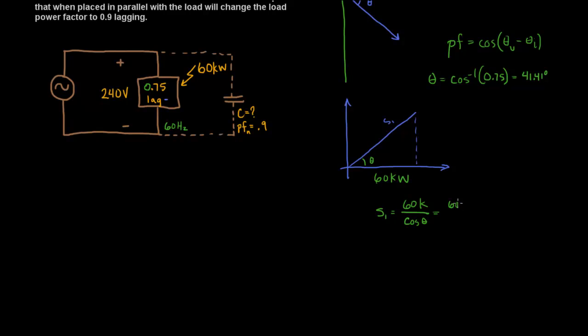So this is 60,000 over 0.75, which is equal to 80,000. And that's our magnitude.